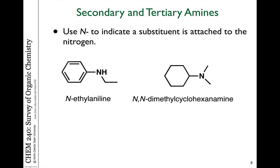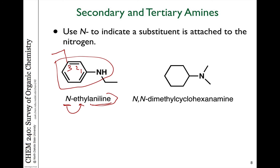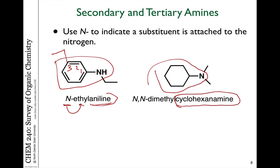If we have more than one alkyl group or substituent on the nitrogen, we use the designation N to indicate it's attached on the nitrogen. For example, if the parent molecule is aniline and we have an ethyl group on the nitrogen, it's N-ethylaniline — as opposed to 3-ethylaniline, where the ethyl group is on the ring. If there are two substituents on the nitrogen, such as two methyl groups on cyclohexanamine, we use N,N-dimethylcyclohexanamine.